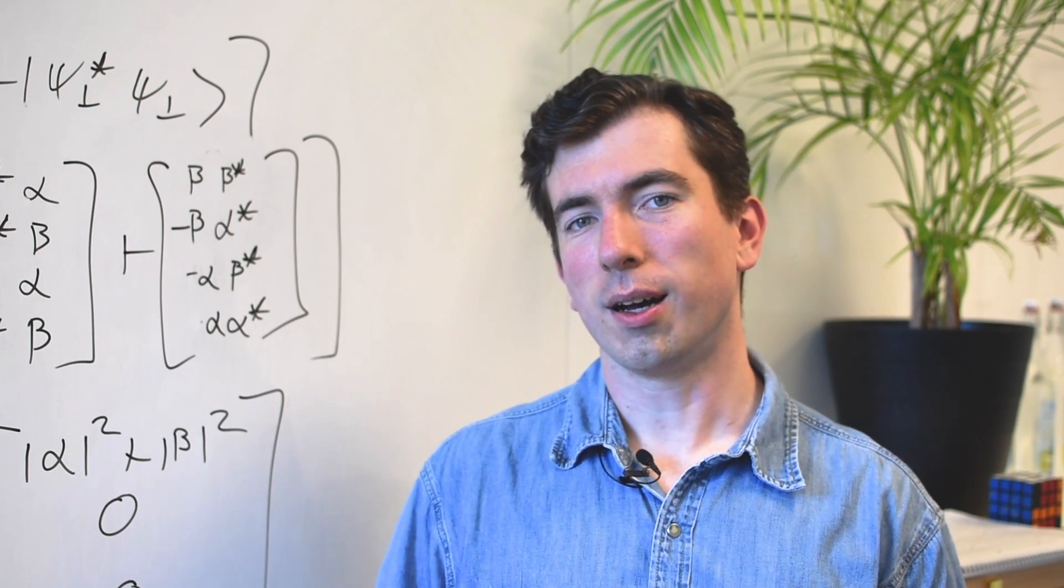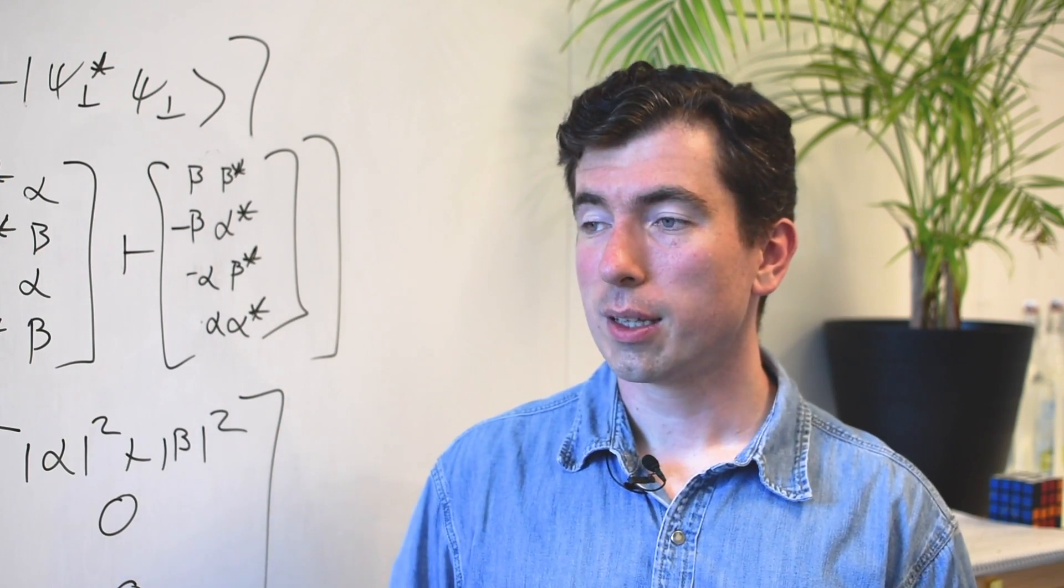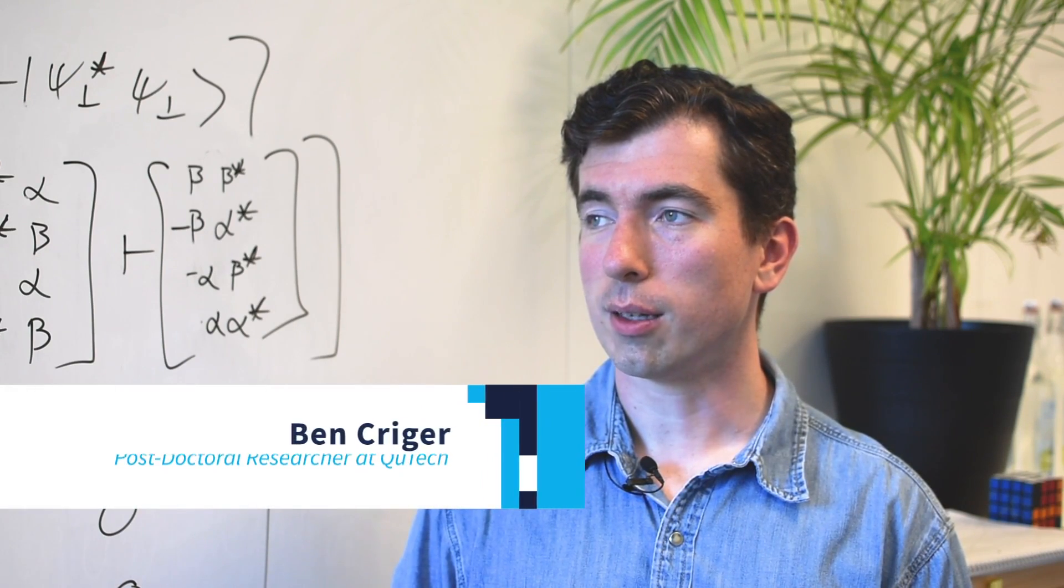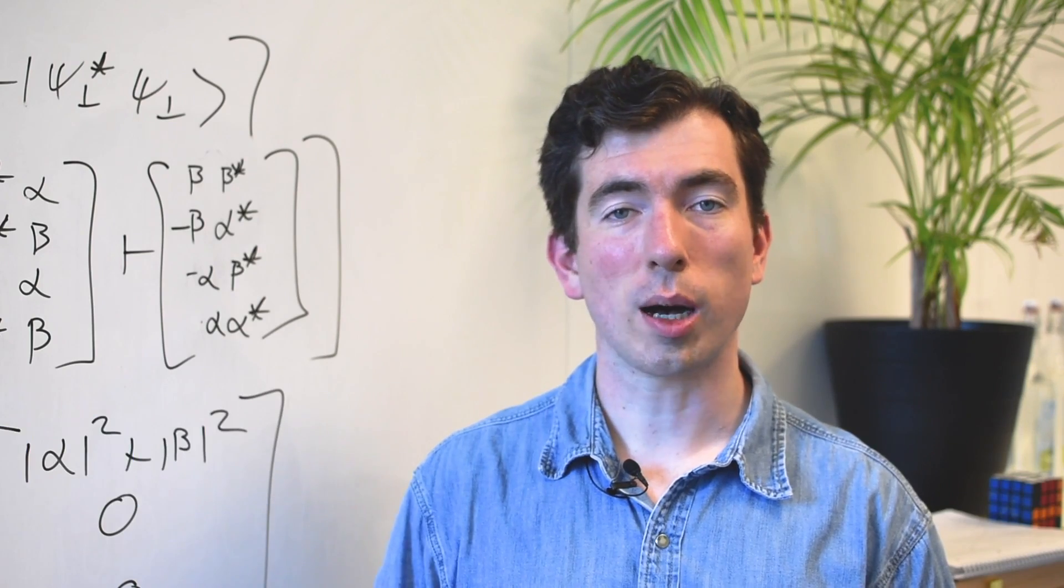Often when doing quantum information, ket notation can fail you. This happens a lot when you have a densely packed vector full of a bunch of different coefficients, and there's no obvious structure.